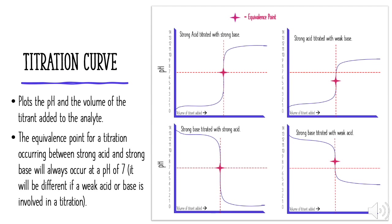For strong acids and bases, the equivalence point is at a pH of 7. If you have a weak acid or weak base involved in your titration, the equivalence point is not going to be exactly neutral — it will be slightly acidic or slightly basic, because Brønsted-Lowry acids and bases form conjugate acids and conjugate bases that are slightly acidic or basic. But we're not going to worry too much about those in this video; we'll focus on titration curves with strong acids and strong bases.